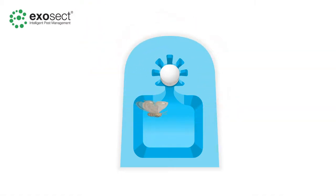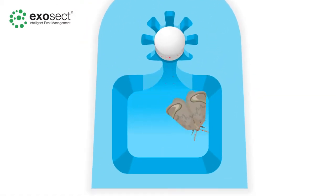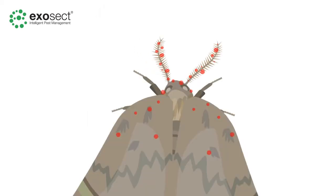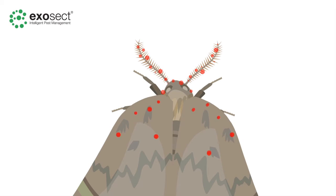Once they land, they start a mating dance, building up electrostatic charges which attract the entostat powder, including the female pheromone. The male's pheromone receptors become overloaded, and so the male is unable to locate females.